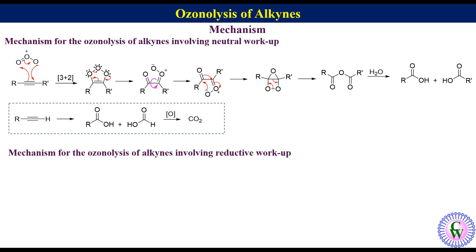In the mechanism involving reductive workup, there is also formation of an ozonide. If we have a reducing agent — suppose triphenylphosphine — it donates an electron pair to the peroxy oxygen. Due to this, the peroxy bond gets broken and formation of a C=O pi bond occurs. This is accompanied by breaking of the C-O bond, formation of a C=O pi bond, and breaking of the C-O single bond. Thus the whole process leads to the formation of triphenylphosphine oxide and the alpha-diketone.